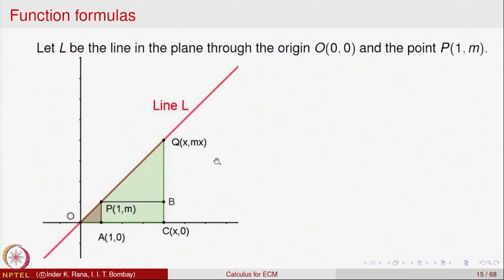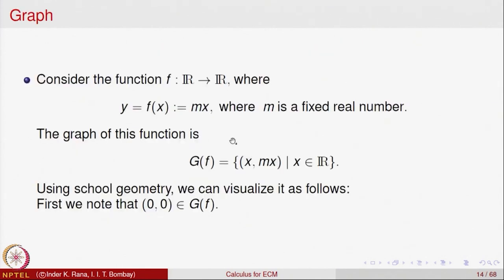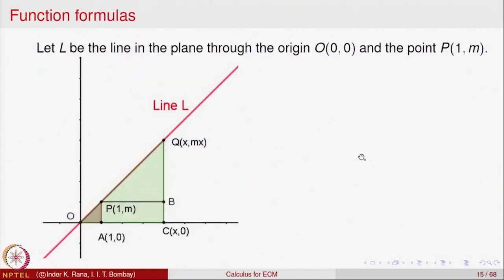Let us look at any line in the plane which passes through the origin, because origin is on the graph. If x equal to 1, then (1, m) is also a point on the graph. Our graph is going to pass through two points. Let us test the possibility that our graph is the line passing through (0, 0) and the point P which is (1, m). Let us call this line L and take any general point Q on this line and find out its coordinates.